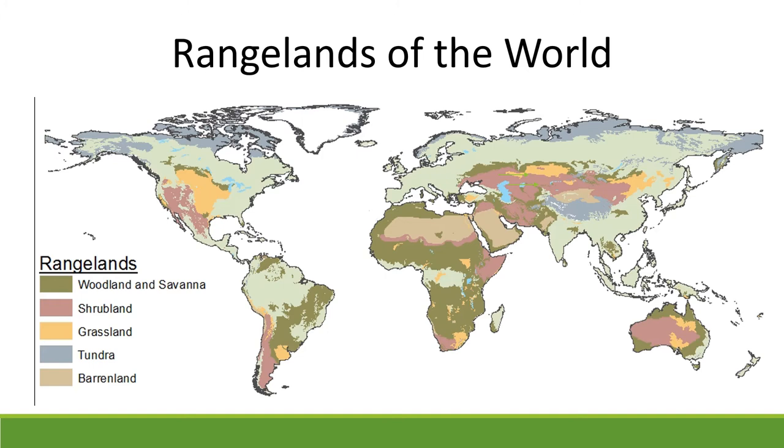The tundra is where it's really cold and moist — found at very high latitudes.